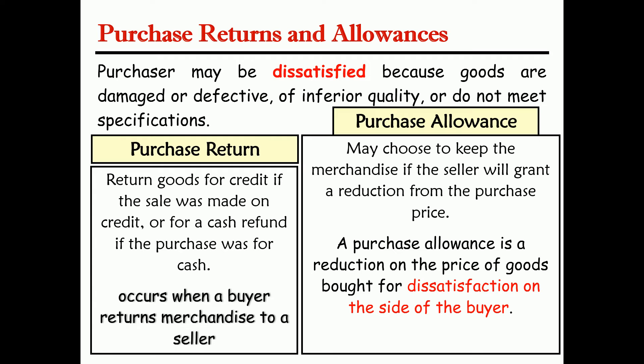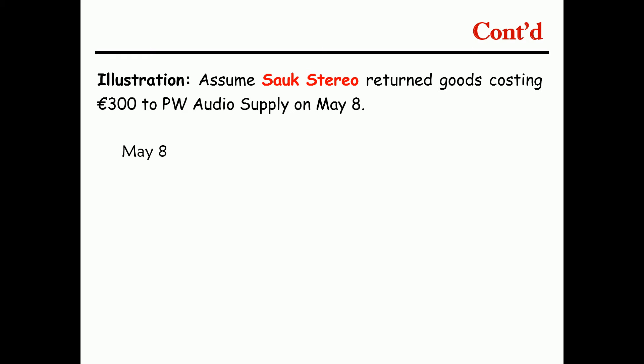For a purchase return, assume returning goods costing $300 to PW Audio Supplies. The journal entry for purchasing returns and allowances is: debit Accounts Payable and credit Inventory for the returned amount.